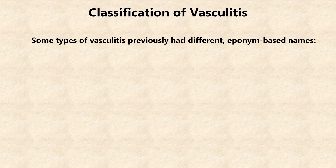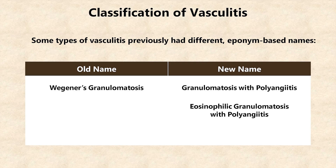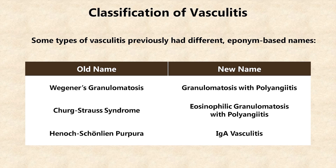A quick word about some of those names. Some types of vasculitis previously had different eponym-based names. For example, granulomatosis with polyangiitis was known as Wegener's granulomatosis until just a few years ago. Eosinophilic granulomatosis with polyangiitis was known as Churg-Strauss syndrome. And IgA vasculitis was known as Henoch-Schönlein purpura. In fact, most physicians still refer to these diseases by their eponyms, even if the scientific literature is shying away from them. Journals and professional societies aren't just changing the names for the sake of avoiding eponyms in general.